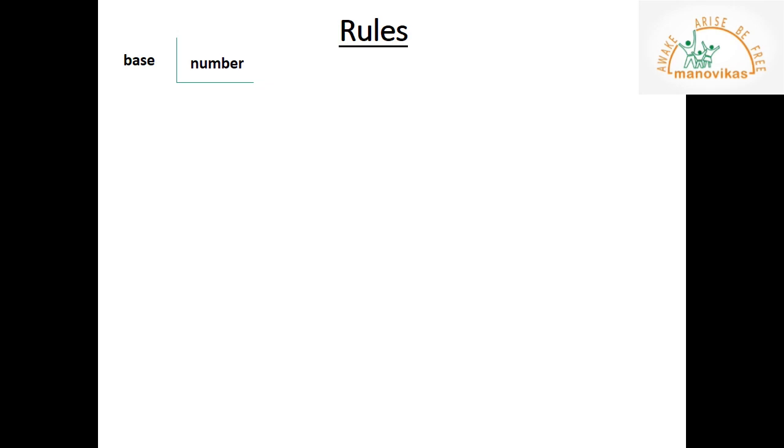For converting a number from decimal number system to binary number system, there are certain rules to be followed. First, write the decimal number and divide it by the base value of the new number system you are going to make. Since we are converting to binary, the base is 2, so divide by 2. When you divide, you will get two answers: one is the quotient and another is the remainder. Separate the quotient and the remainder and write them in their respective places.